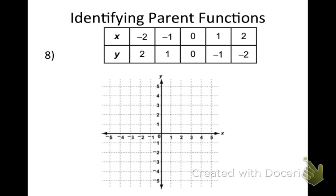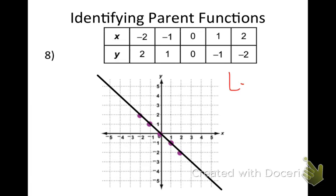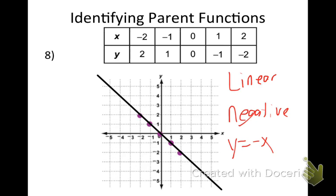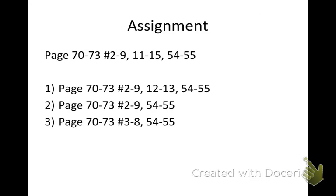Try this one on your own — plot the coordinates: (-2,2), (-1,1), (0,0), (1,-1), (2,-2). Connect the dots. The parent function is linear. This graph has a negative slope, so it's just flipped. My graph would be like Y=-x — it's flipped over.